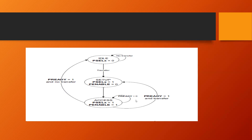During the transition from setup to access, signals such as PWDATA, PWRITE, and PPROT must be stable — they should not change. Whatever values they hold must remain constant throughout the entire transition from setup to access and within the access state. There should be no change in these signals during this time.